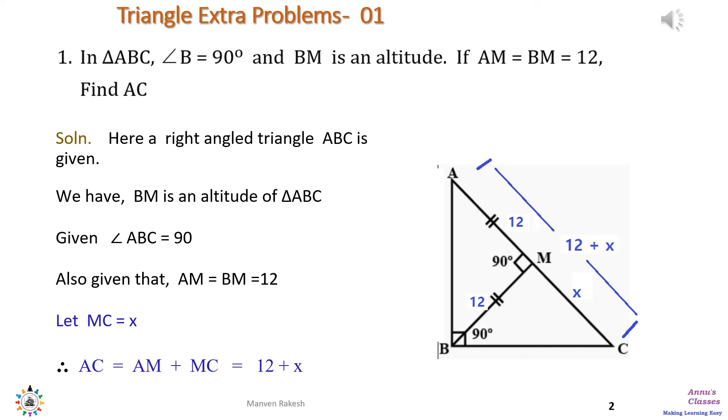So please students remember that whenever there is a case of a right-angled triangle and an altitude is drawn on the hypotenuse, the three triangles made will always be similar to each other. That means triangle ABM will be similar to triangle ABC, triangle BMC will also be similar to triangle ABC, and AMB will be similar to BMC. So we go ahead with this understanding.